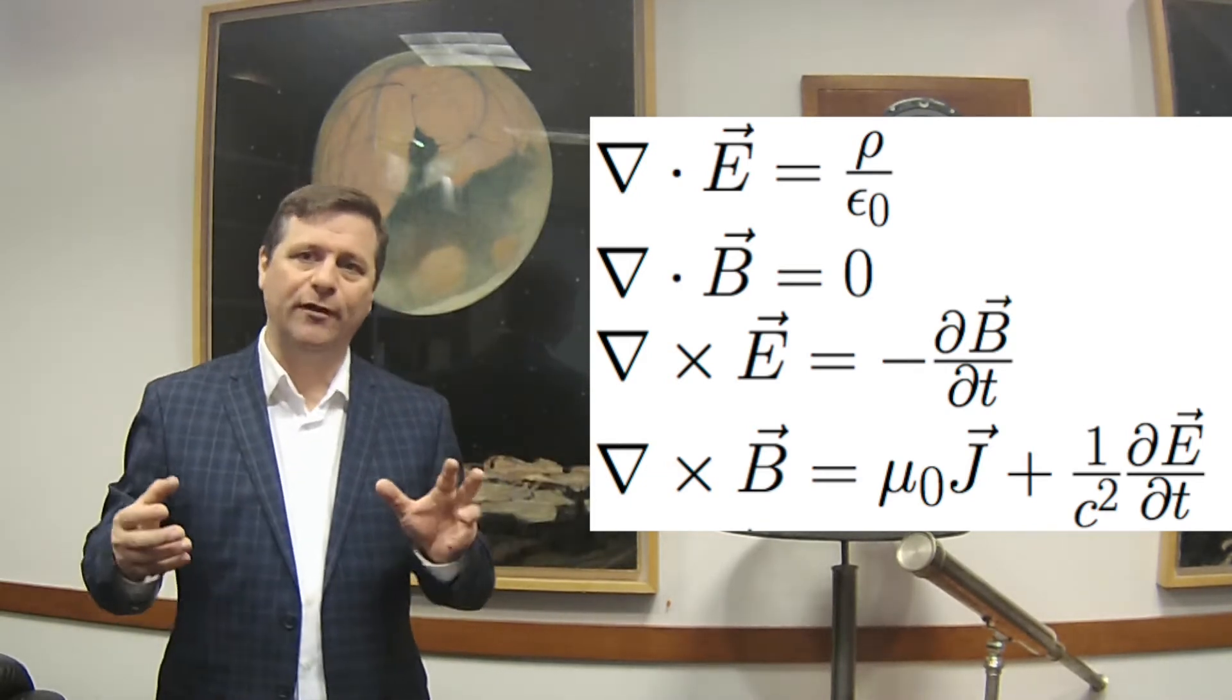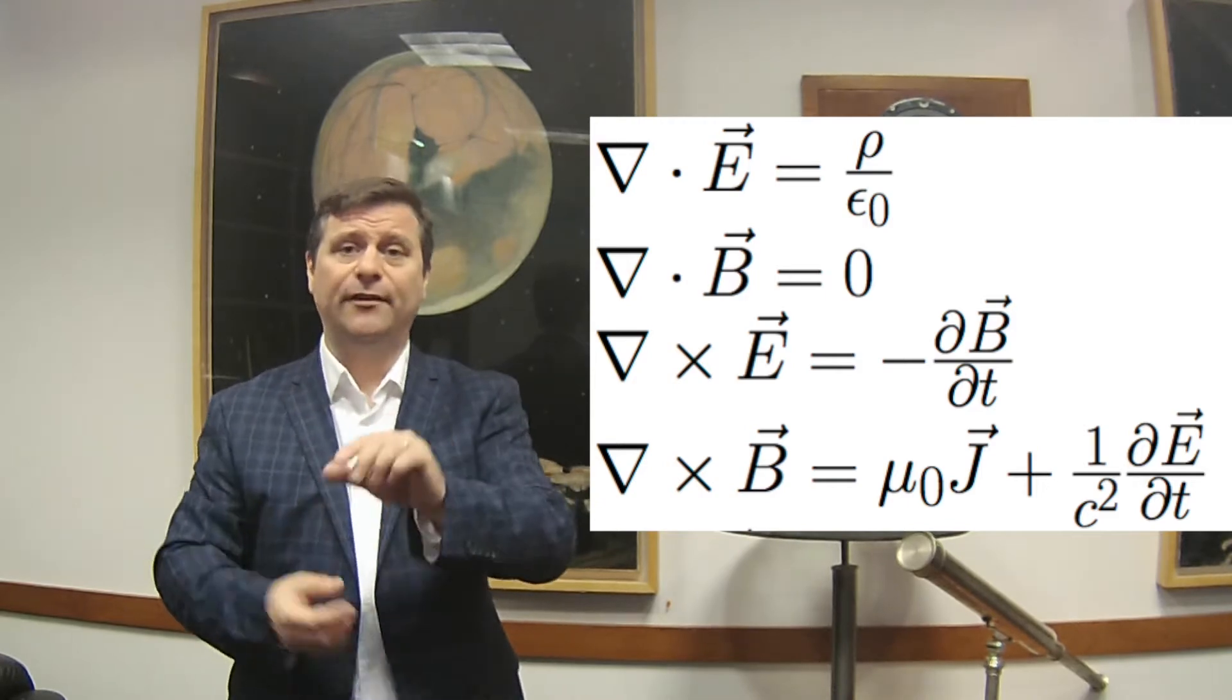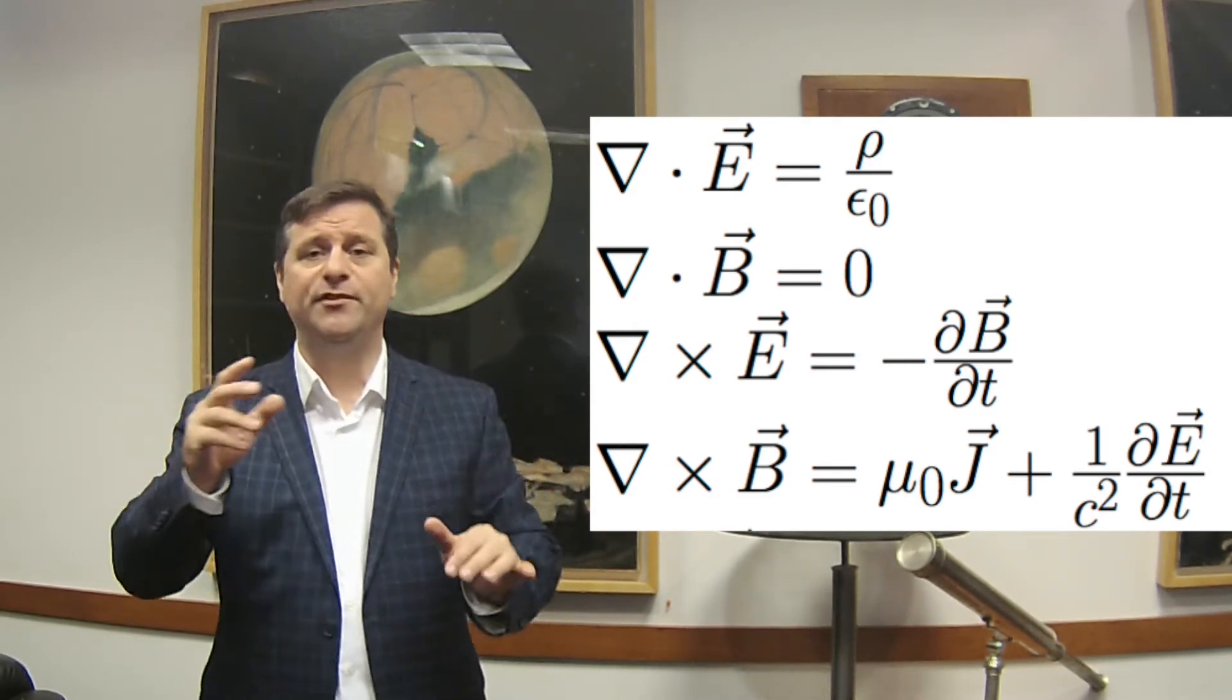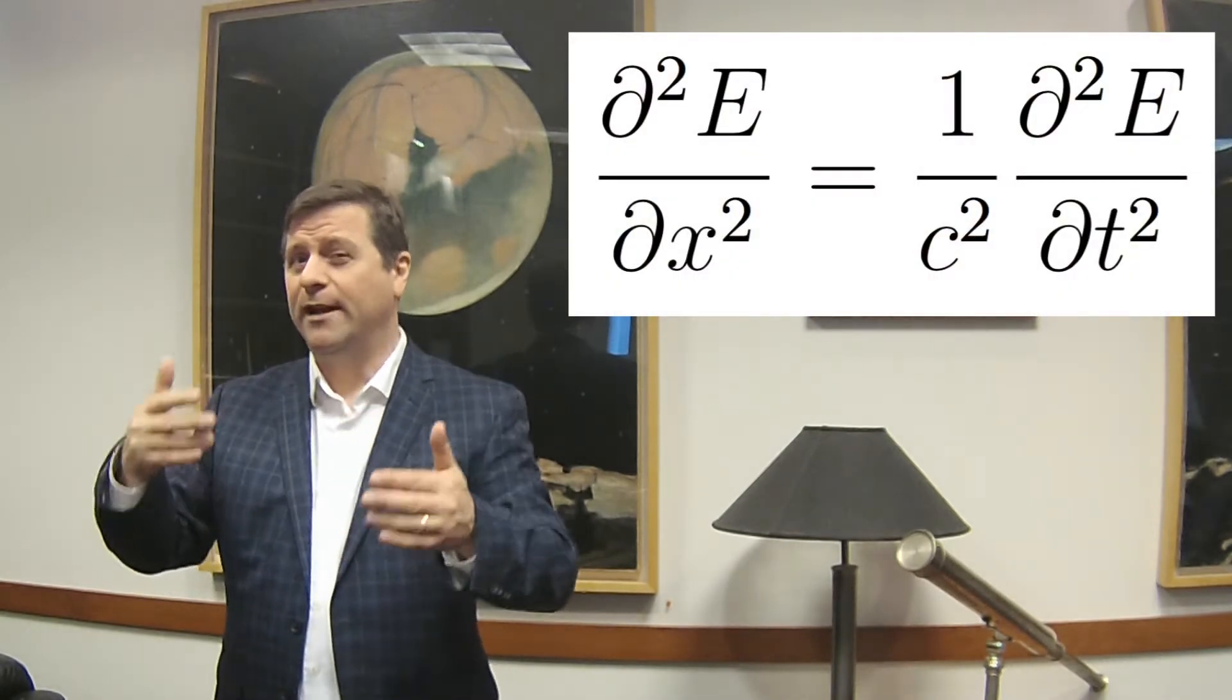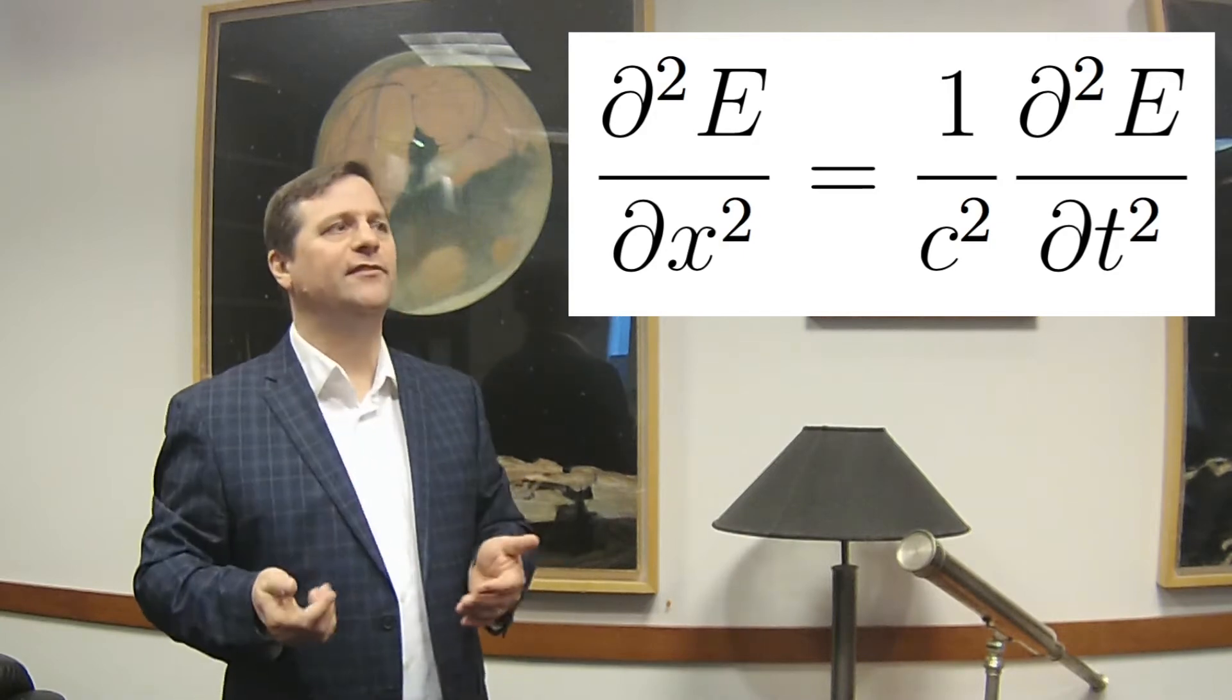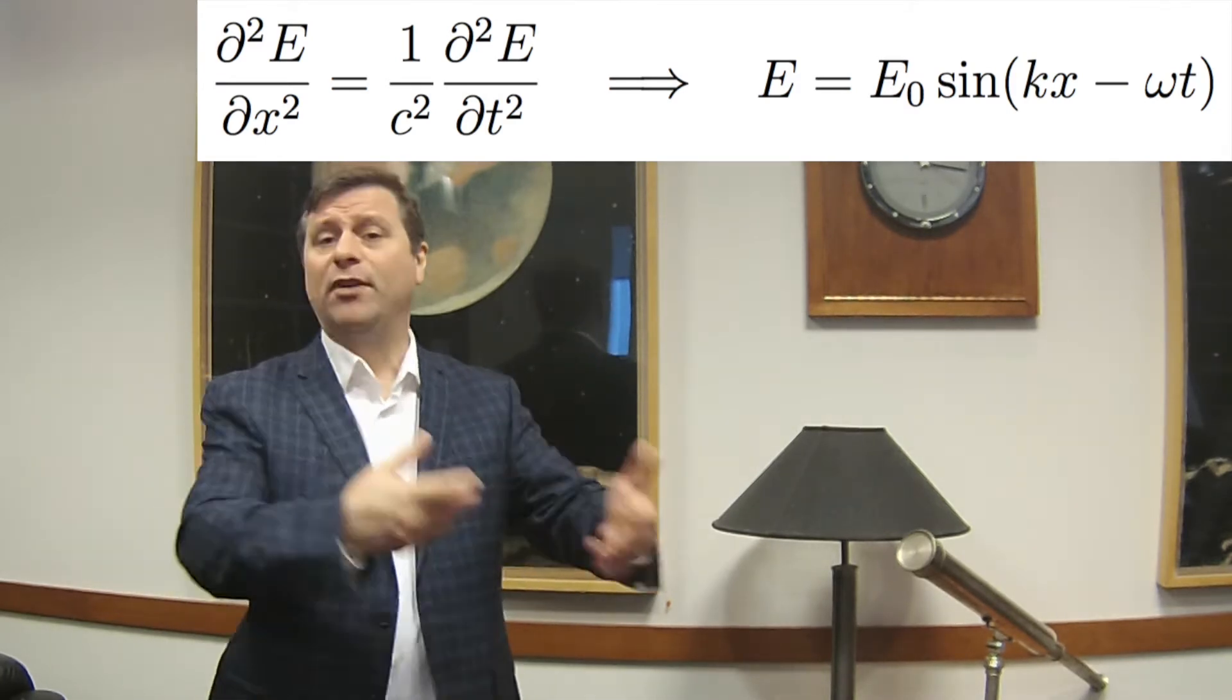Maxwell is considered the granddaddy of all this by taking these disparate ideas, formalizing them mathematically, and showing how they're all interrelated. These four equations link the electric field, magnetic field, currents, changing currents, position in space, and changes in time. If you solve the equations, a wave equation falls out. Maxwell's equations allow for a wave solution - a disturbance inside a field that propagates through space at a given rate, at some speed.